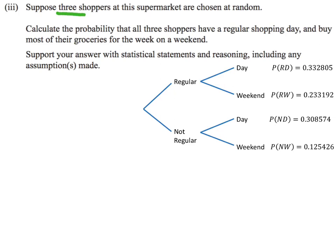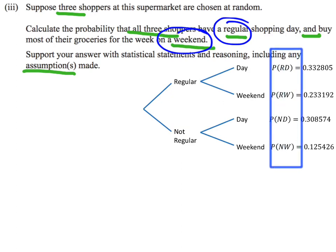We've got three shoppers chosen at random. We want to find the probability that all three shoppers have a regular shopping day and buy their groceries on the weekend. After that, we need to support our answer with some statistical reasoning, including any assumptions made. Let's start by focusing on calculating the probability.